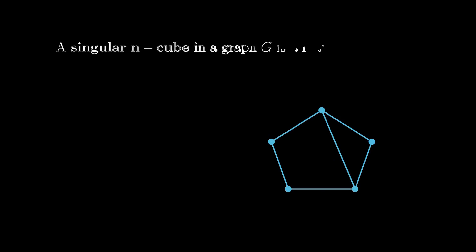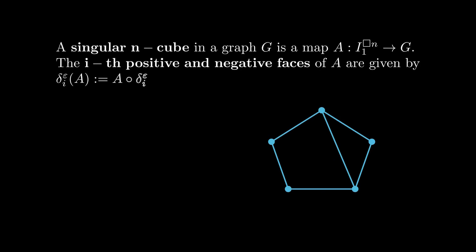Given a graph g, we define a singular n-cube, or just n-cube, in g to be a graph map a from the n-cube into g. We can then use these delta i-minus and delta i-plus maps to define the i-th positive and negative faces of a, which are given by just pre-composing with these maps.